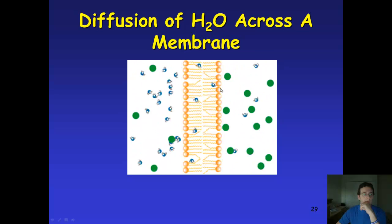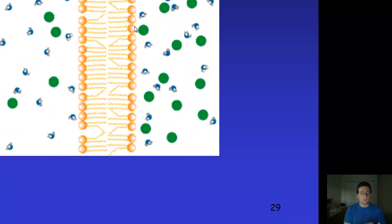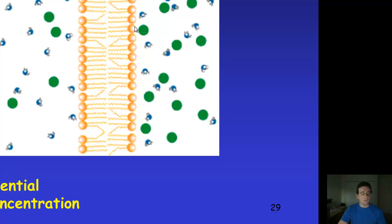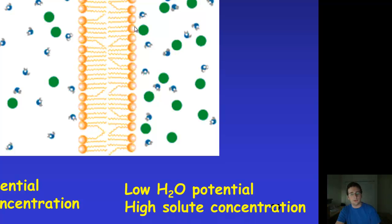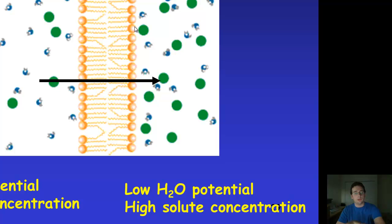Here's an example of osmosis — water moving from one side to the other. Both the solute and the water will move until the concentration is about the same on both sides of the membrane. If you have high water potential on one side and low water potential on the other because of a high solute concentration, the water tends to move toward the high-solute side while the solute tends to move toward the low-solute side.